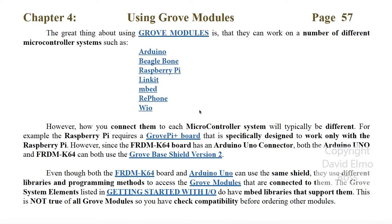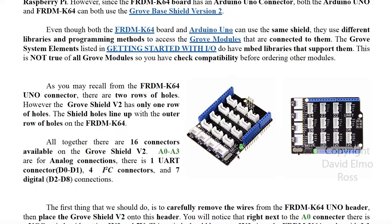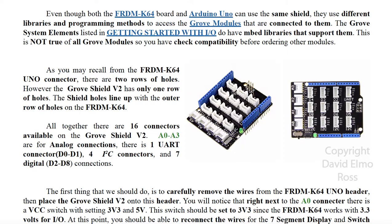So far we've connected a 7-segment display and switch interface to our SPI, and what we're going to do now is use a number of Grove modules to connect up to our microcontroller using the Grove Base Shield version 2.